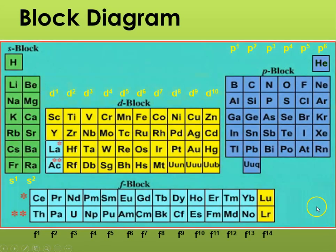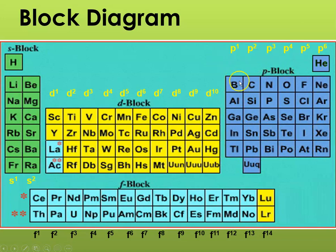On our block diagrams, the first two columns are the S block — S1 and S2. Then the P block is where P1 through 6 fill in, and then there's the D block where the transition elements are, and the F block contains the inner transitions.